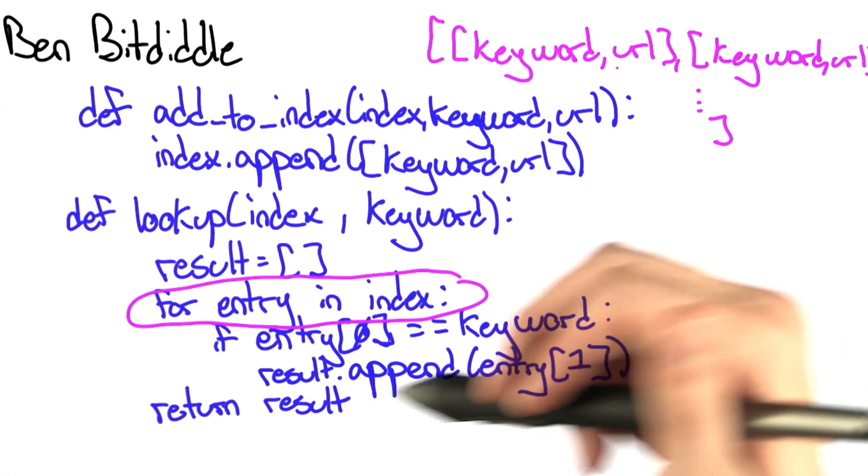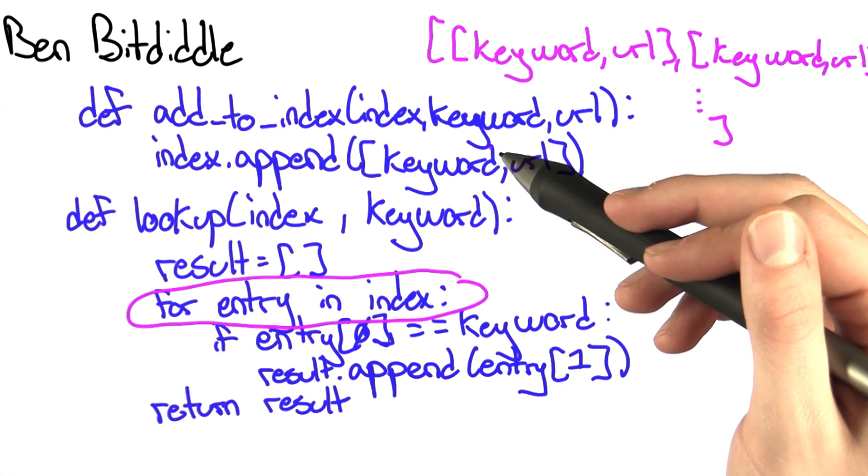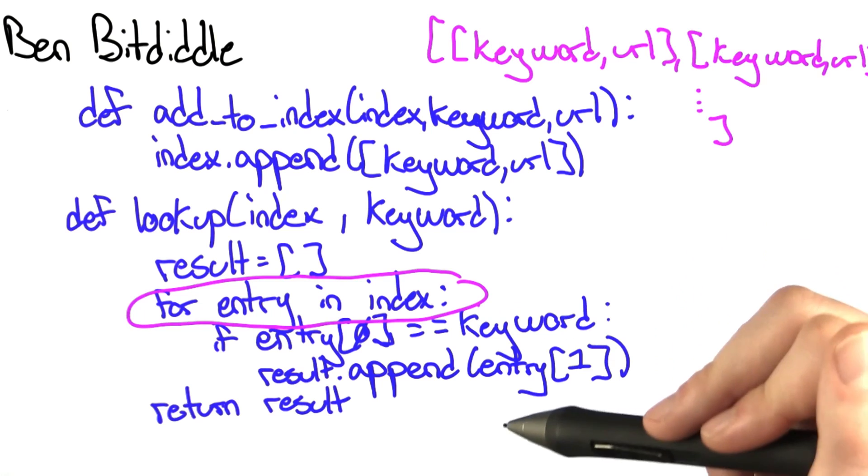So in the end, all things considered, the behavior is the same, but addToIndex runs faster, and lookup will run slower.